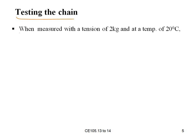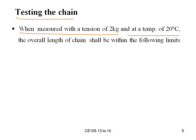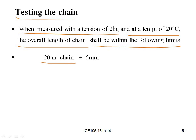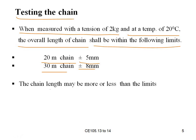In order to test the chain, when measured with a tension of 2 kg and at a temperature of 20 degrees Celsius, the overall length of chain shall be within the following limits: for a 20-meter chain, plus or minus 5 mm; and for a 30-meter chain, plus or minus 8 mm. These are the permissible limits.